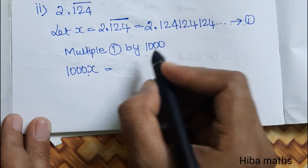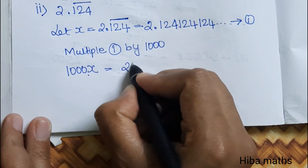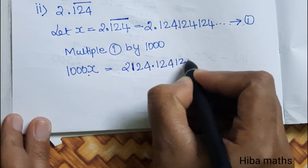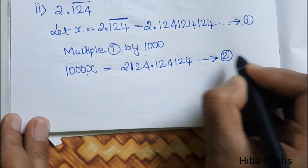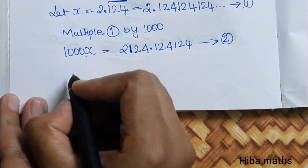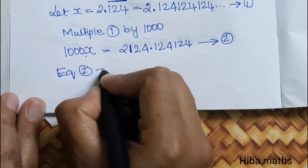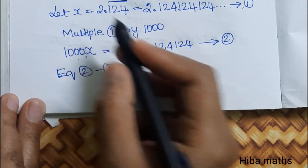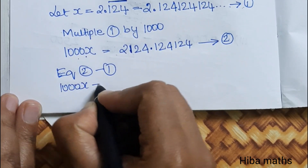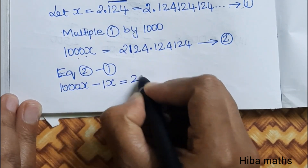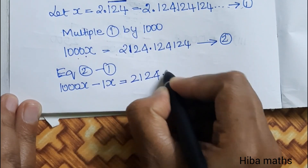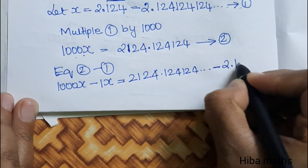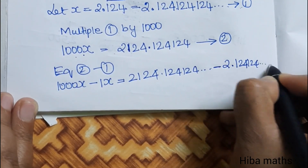So 1000x equals 2124.124124... This is equation 2. Now equation 2 minus equation 1: 1000x minus x equals 2124.124124 minus 0.124124. So 999x equals 2124 minus 0, giving the answer.